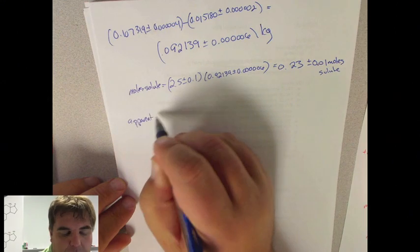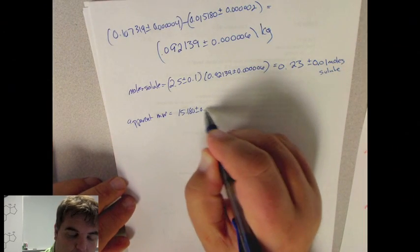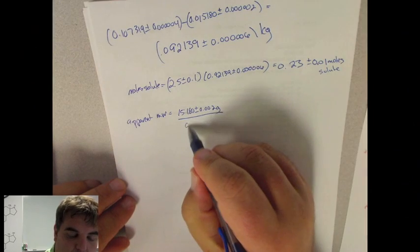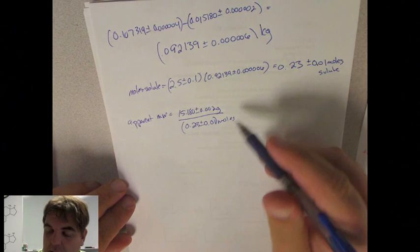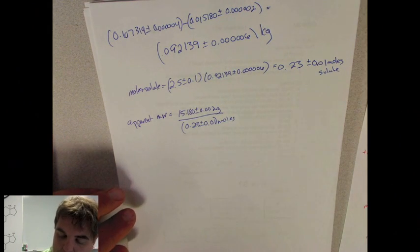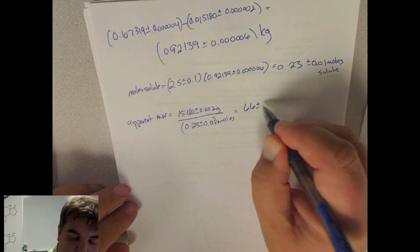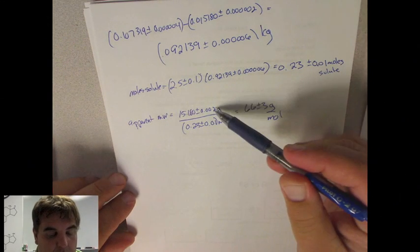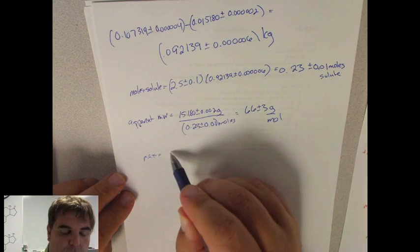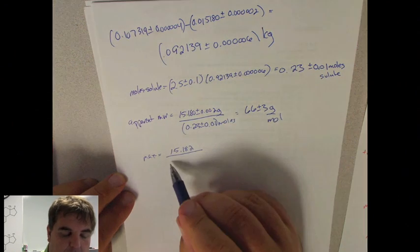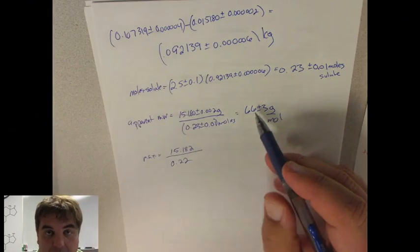So the apparent molecular weight is going to be equal to 15.180 plus or minus 0.002 grams divided by 0.23 plus or minus 0.01 moles. So when we do that, we should get an answer of 66 plus or minus 3 grams per mole. So to get the error, we would maximize this, so our max side would be 15.182 divided by 0.22. That'll be our max number, and then you just subtract that from the ideal number to get the uncertainty.